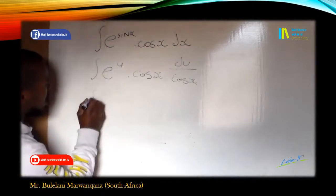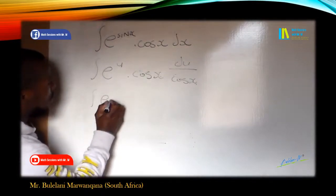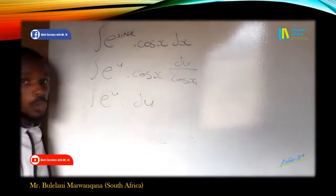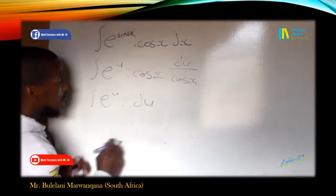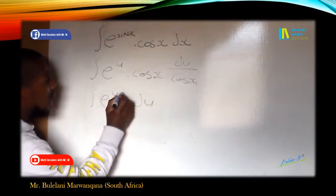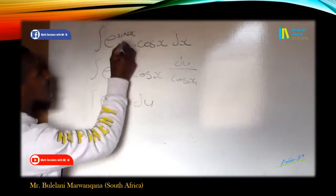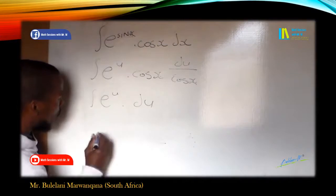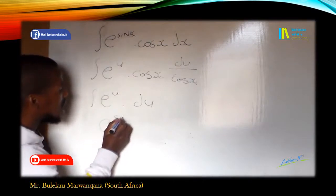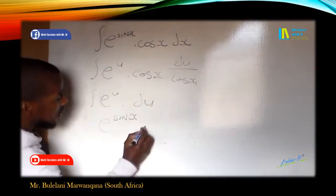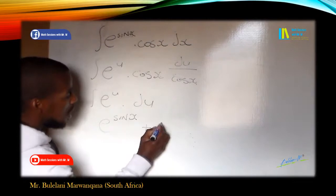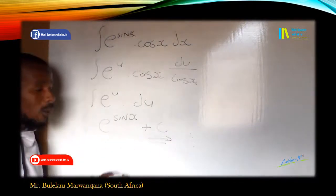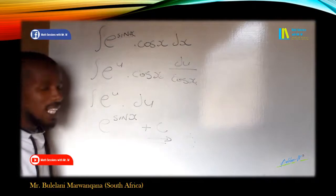We are left with the integration of e^u multiplied by du. On this step we take away the integration sign and substitute u back from the original substitution. So the answer is e raised to the exponent of sine x plus a constant. That's how easy and straightforward this problem is.